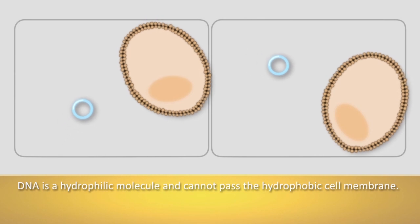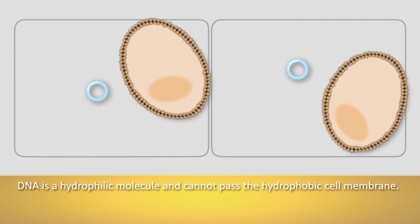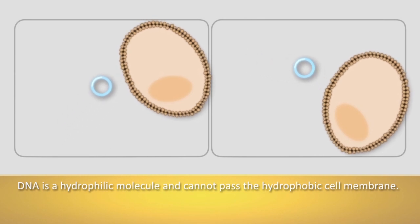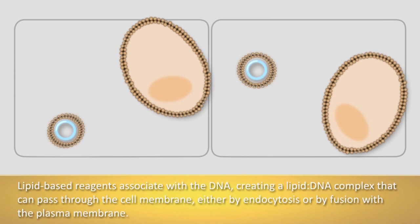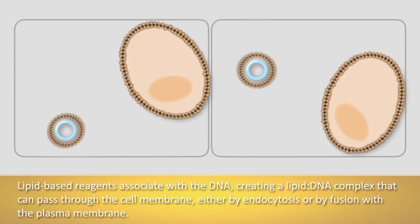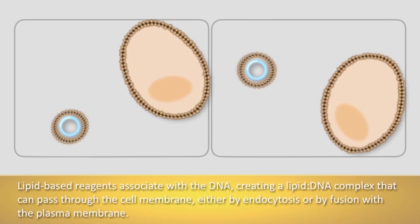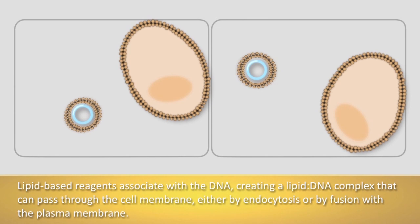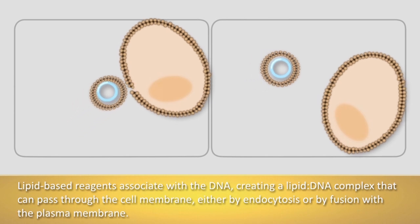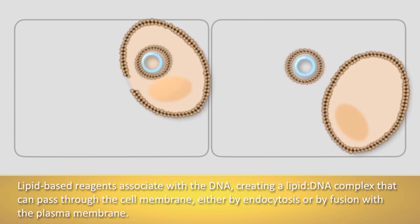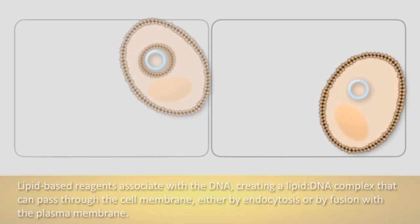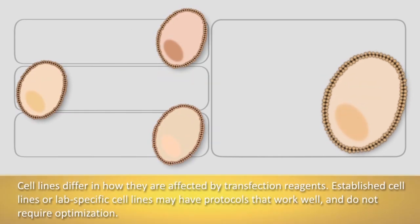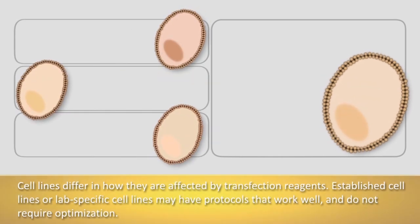DNA is a hydrophilic molecule and cannot pass through the hydrophobic cell membrane. Lipid-based reagents associate with the DNA, creating a lipid-DNA complex that can pass through the cell membrane, either by endocytosis or by fusion with the plasma membrane. Cell lines differ in how they are affected by transfection reagents.